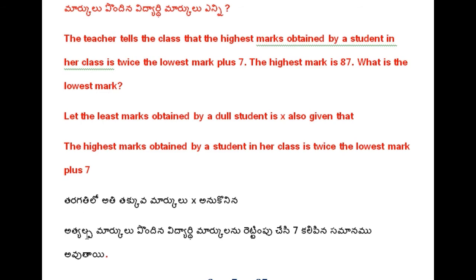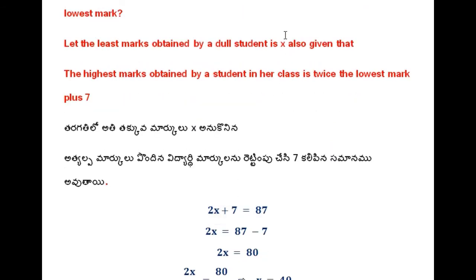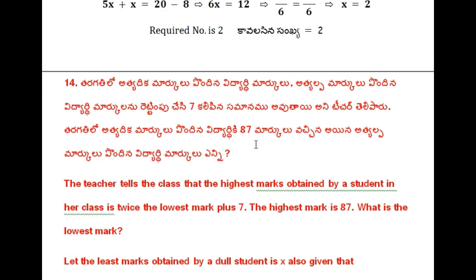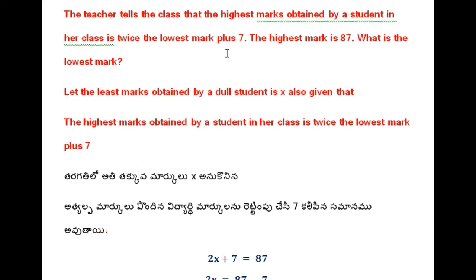Assume that the least mark is taken as x. The highest mark obtained by a student in the class is twice the lowest mark plus 7. So: 2x plus 7 is equal to 87.